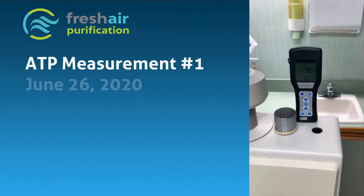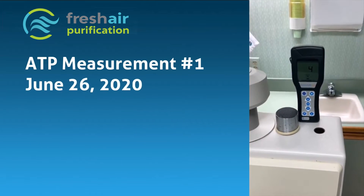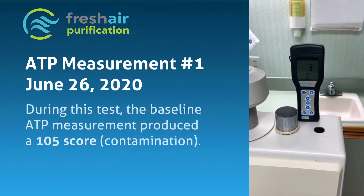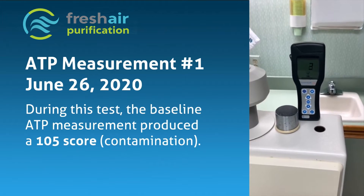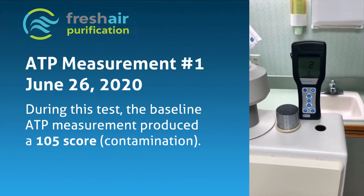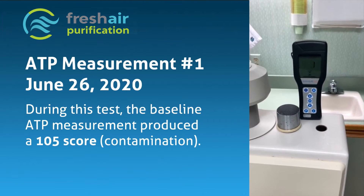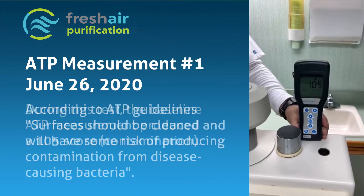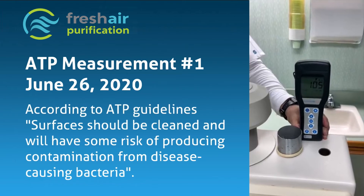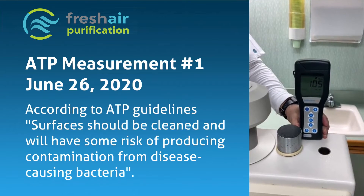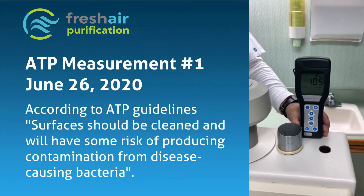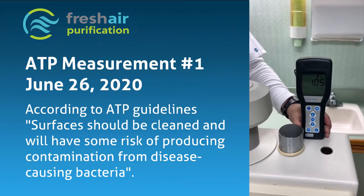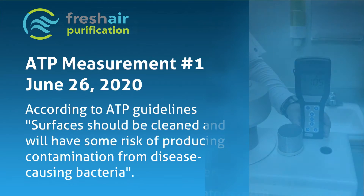ATP Measurement 1. On June 26, 2020, during this test, the baseline ATP measurement produced a score of 105. According to ATP guidelines, surfaces should be clean and will have some risk of producing contamination from disease-causing bacteria.